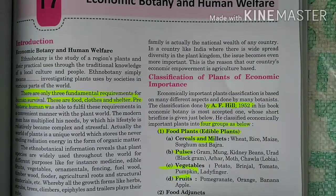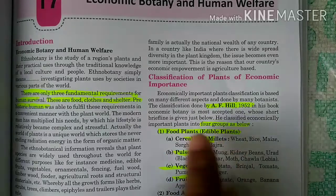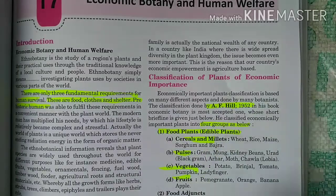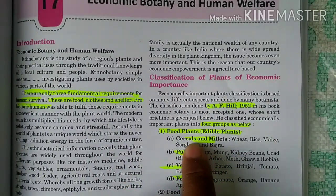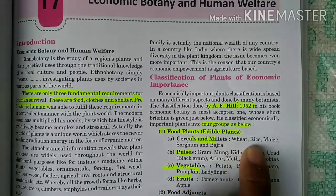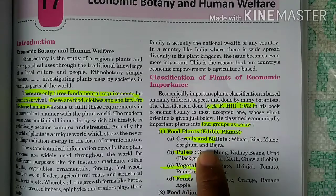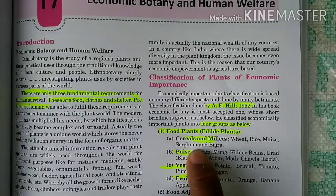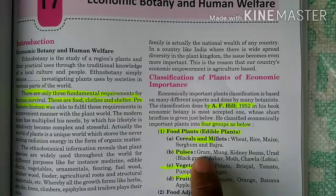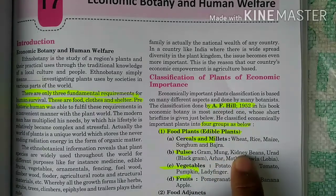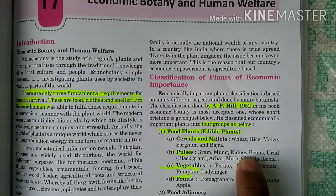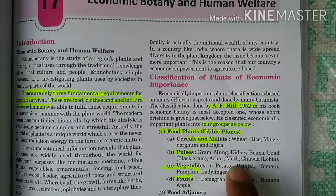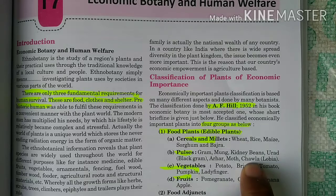Under food plants, the first subcategory is cereals and millets — wheat, rice, maize, sorghum, and bajra. The second subcategory is pulses (dal) — such as gram (chana), moong, kidney beans, rajma, arhar, and cowpea (chawla).